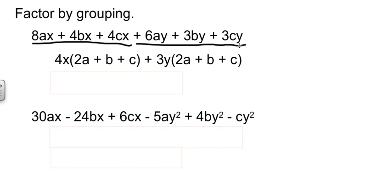There's a 3 in common to everything, and there's a y in common to everything. So if you take the 3 and the y out, you're left with 2a + b + c. Now notice these two factors are identical. Since they have a common factor, I can factor that out. You can get (2a + b + c) times (4x + 3y). You could put this at the back. Either way works. It's the same thing.